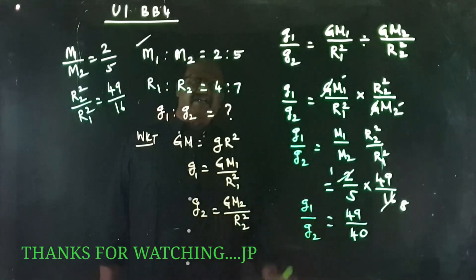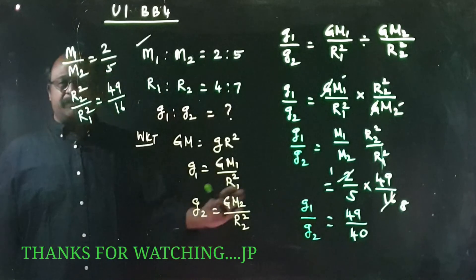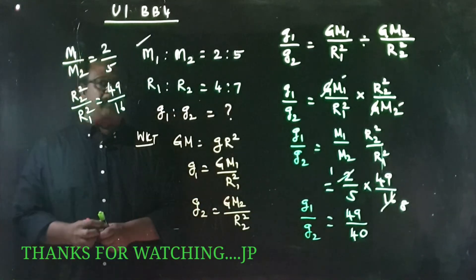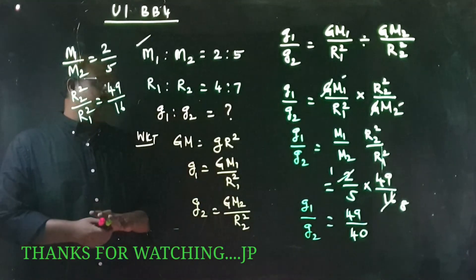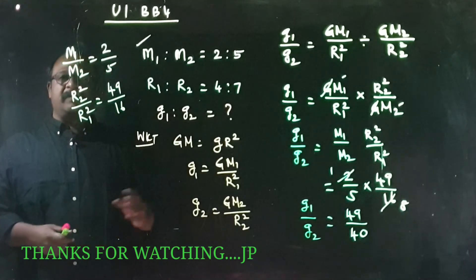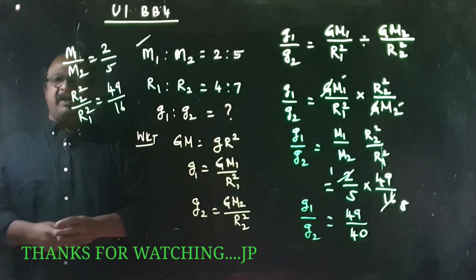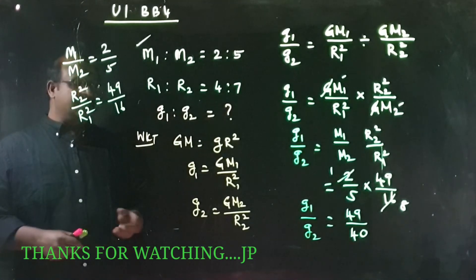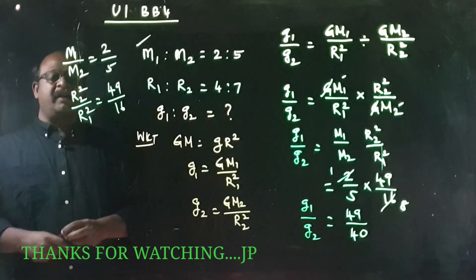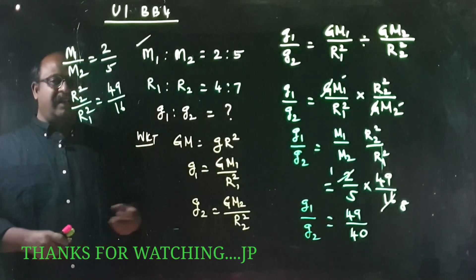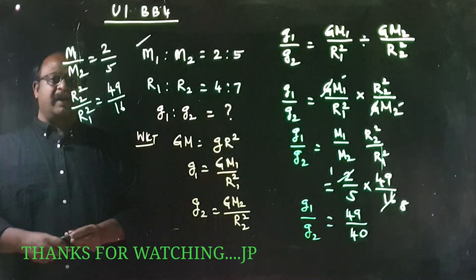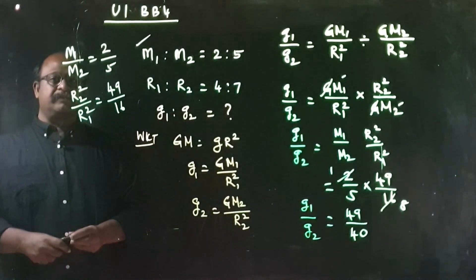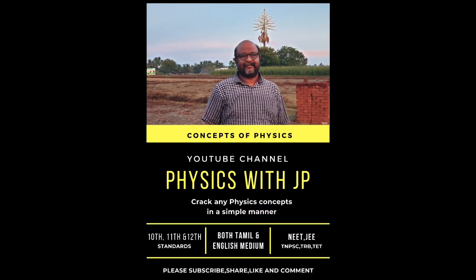So this is the answer: g1 by g2 = 49 by 40. If you are looking at this, look at Physics with JP — subscribe and share. See you in the next class. Thank you.